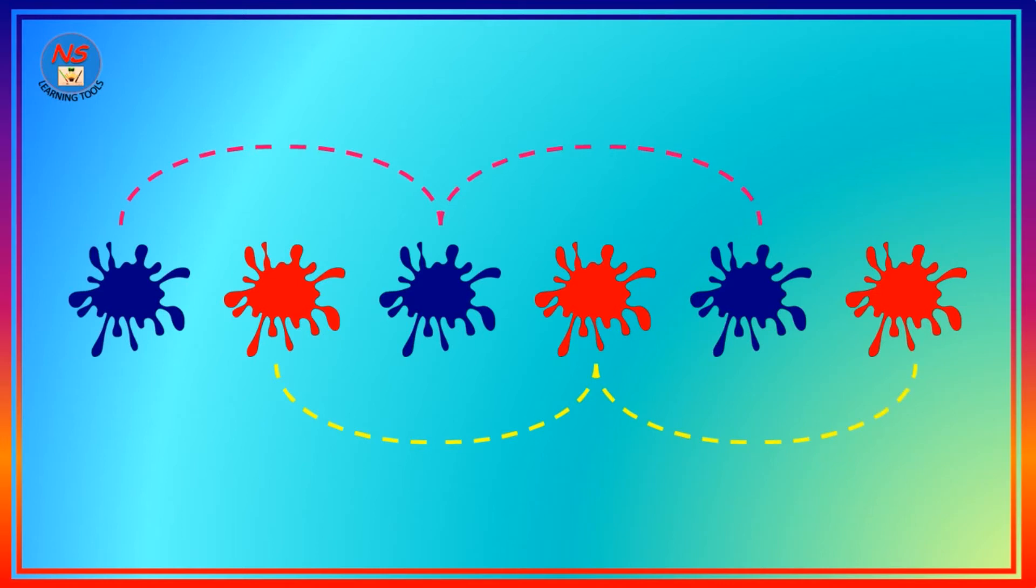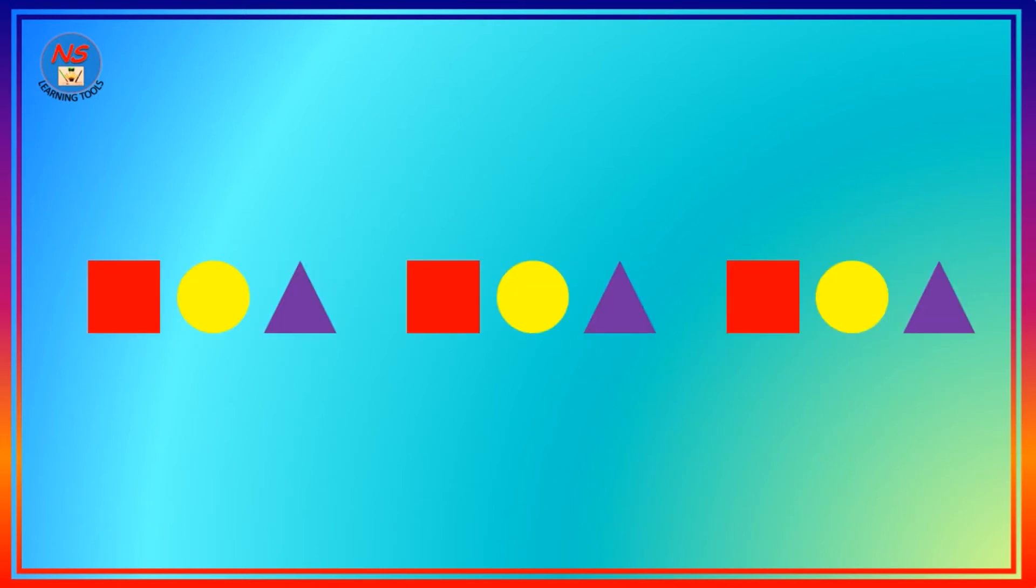Look at this picture. It has square, circle, triangle, square, circle, triangle, and so on. This is called a pattern as it is repeating itself.